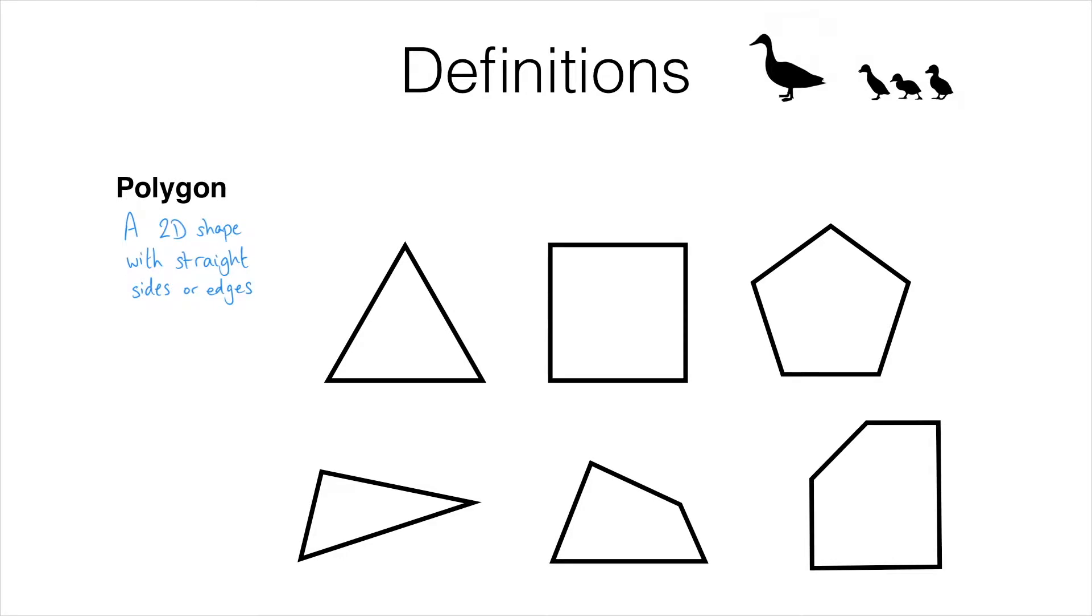So a polygon is the general name for a shape with any number of straight sides. Obviously we have special names for certain shapes like we've just mentioned. Triangle, quadrilateral, pentagon and so on.